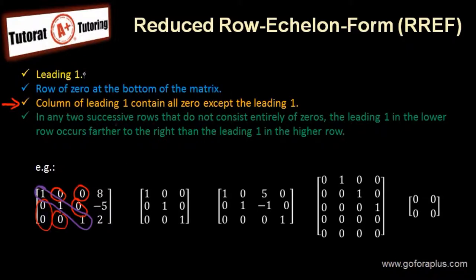Now any two successive rows, the last point that I want to show is the leading one is always further to the right. Let's look at the second example. We have all zero except the leading one, and the leading one is further to the right as we go down the row.